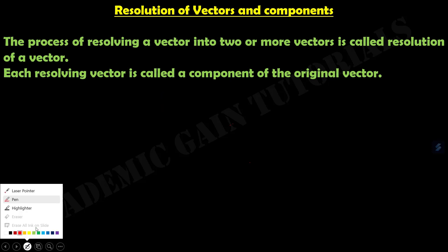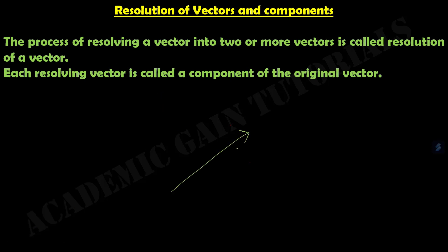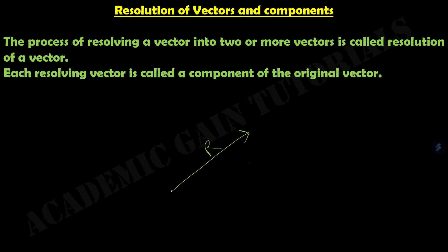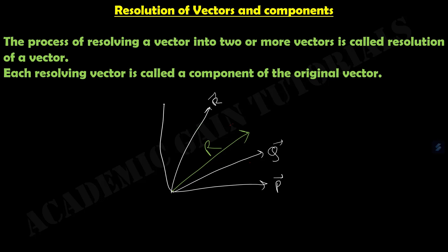If r is the original vector and we are resolving this vector into 2 or more vectors — one vector p, one vector q, one vector t, one vector s — then we have made this r vector into several vectors like p, q, t, and s. As we can divide or resolve this vector into several vectors, this whole process is known as Resolution of a Vector.